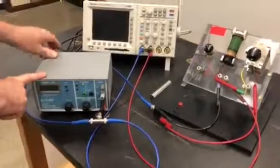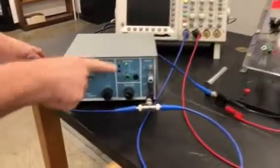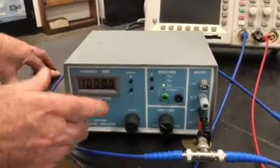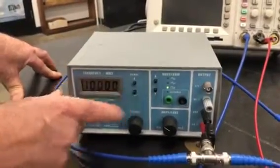So now I'll turn on the function generator which defaults to a kilohertz and a sine wave. I'm going to set it to a square wave instead of a sine wave and I'm going to drop the frequency down to 10 Hertz.